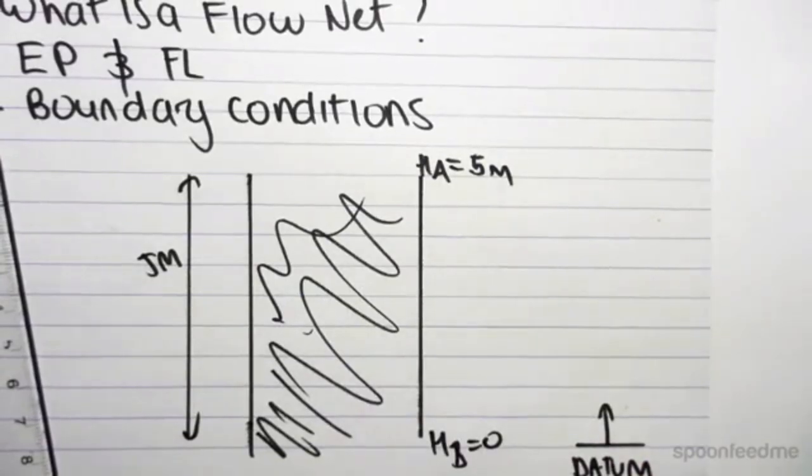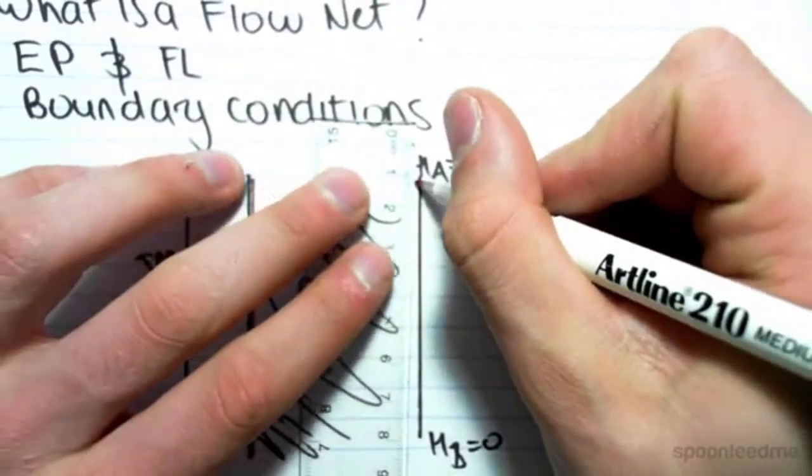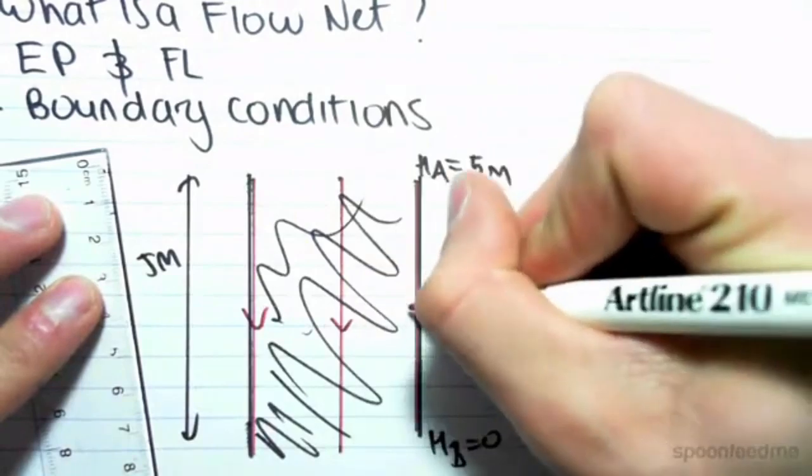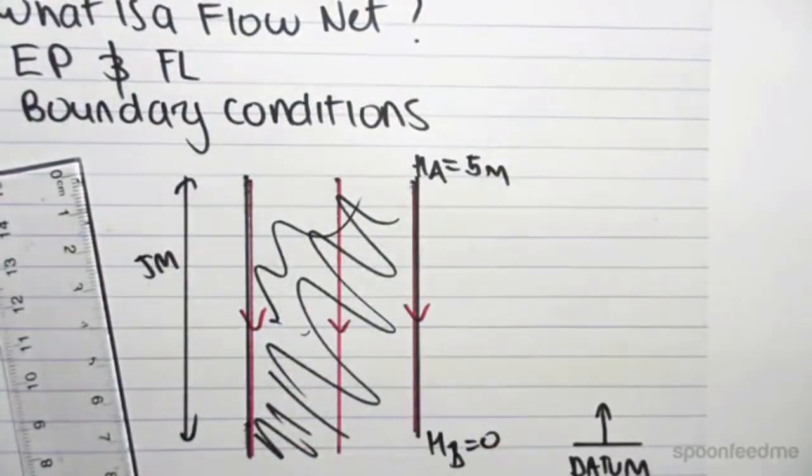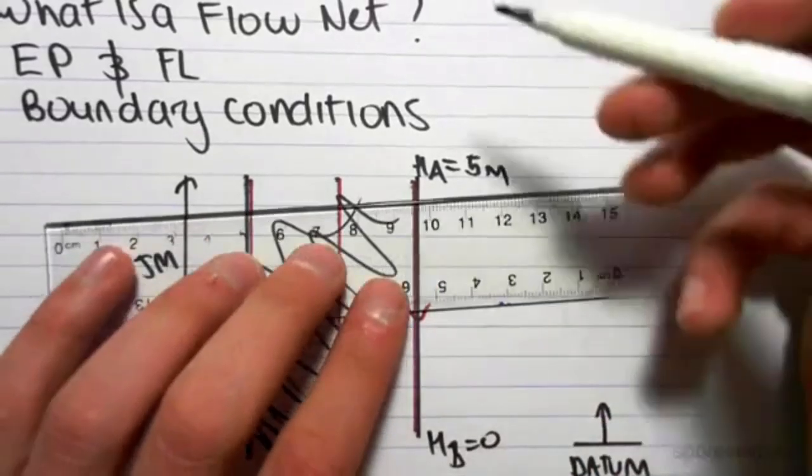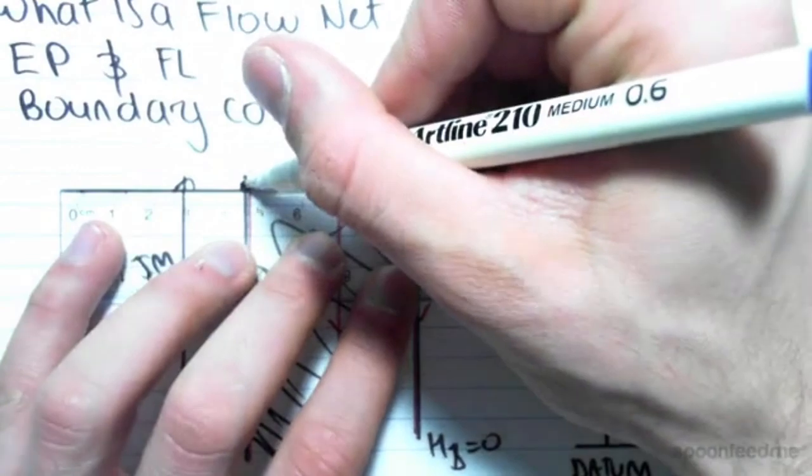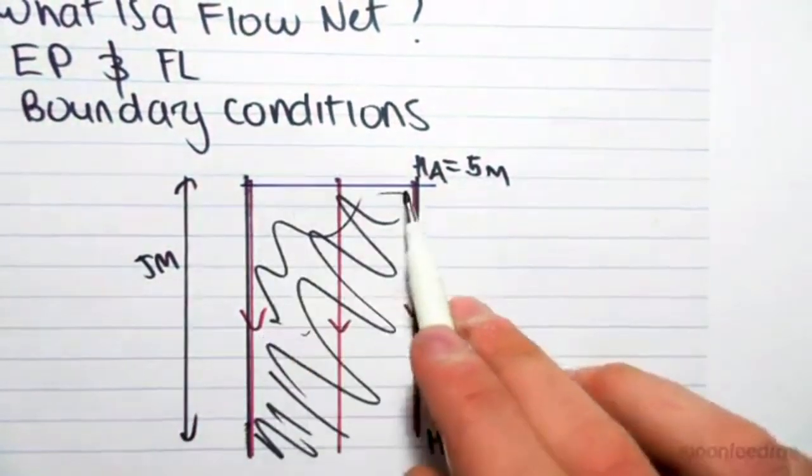So what we do is we model this using something called a flow net, which has two components. It has something called flow lines, which are these red lines. They just show the water, how it flows through. And then we also need to show something called an equipotential line. An equipotential line is just a line which shows points of equal head. So for this example, it's very simple.